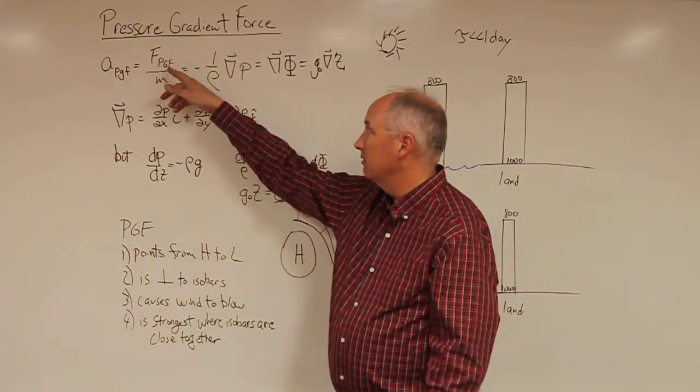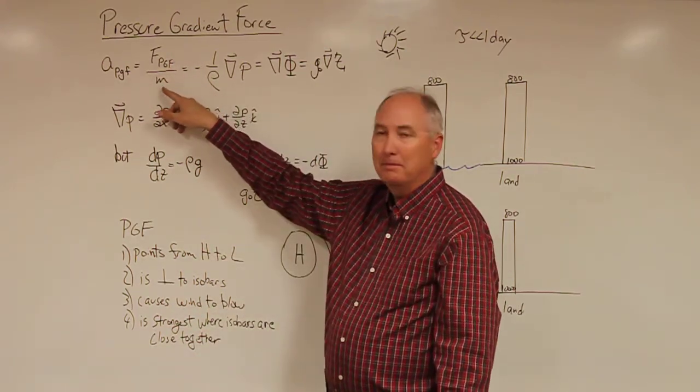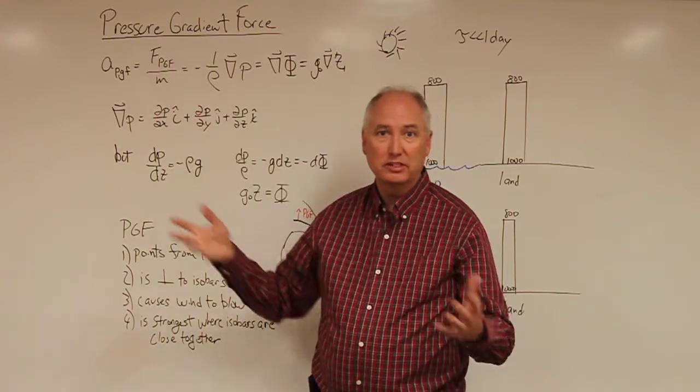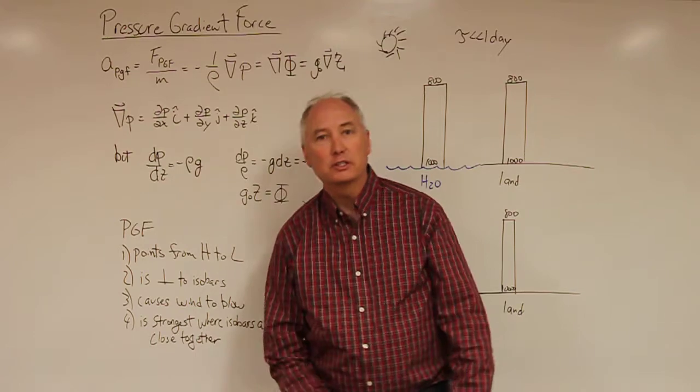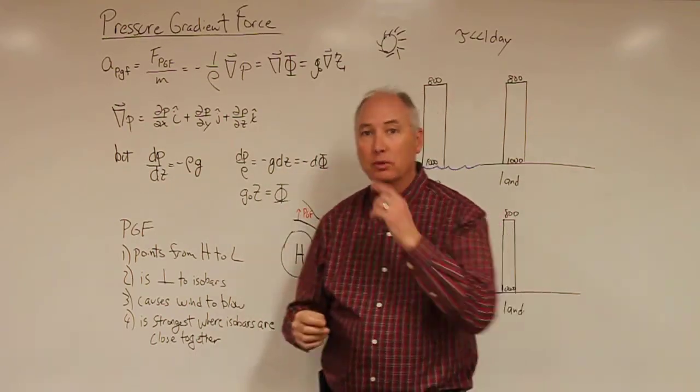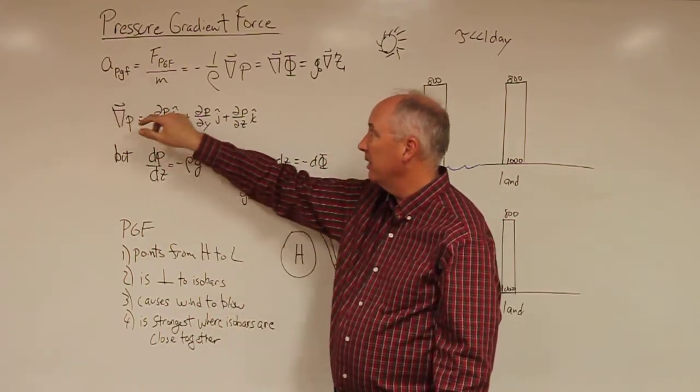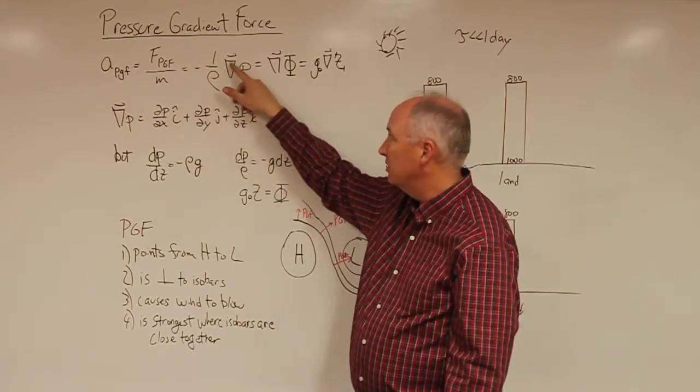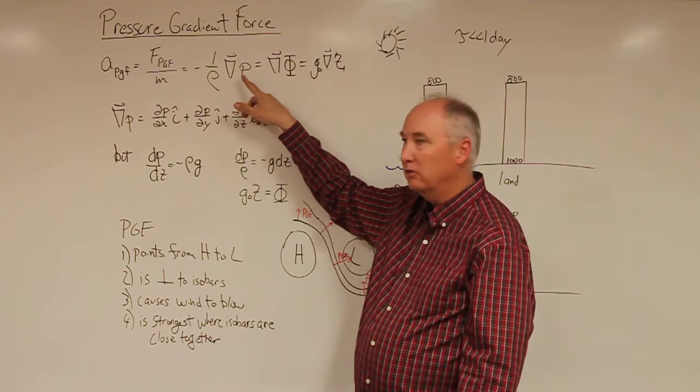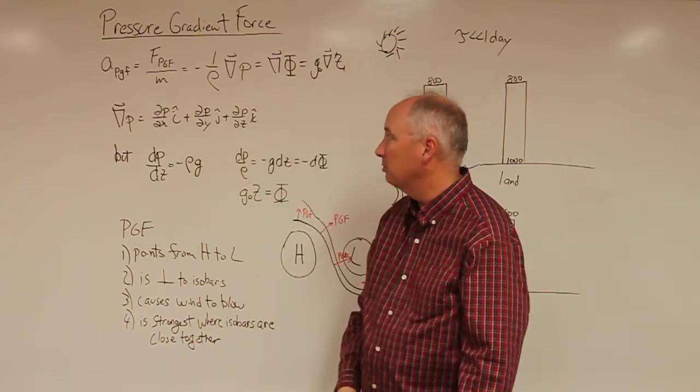Mathematically, the pressure gradient force, if you divide by mass, since force is equal to mass times acceleration, is actually the acceleration due to the pressure gradient force, and that's really what we're after. So the acceleration due to the pressure gradient force is actually equal to minus one over the density times the gradient operator of the pressure.